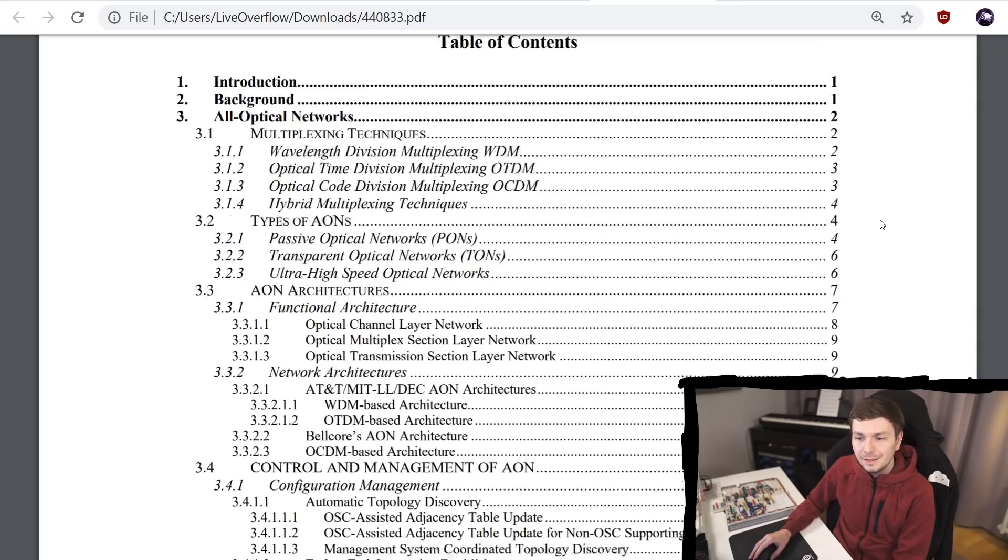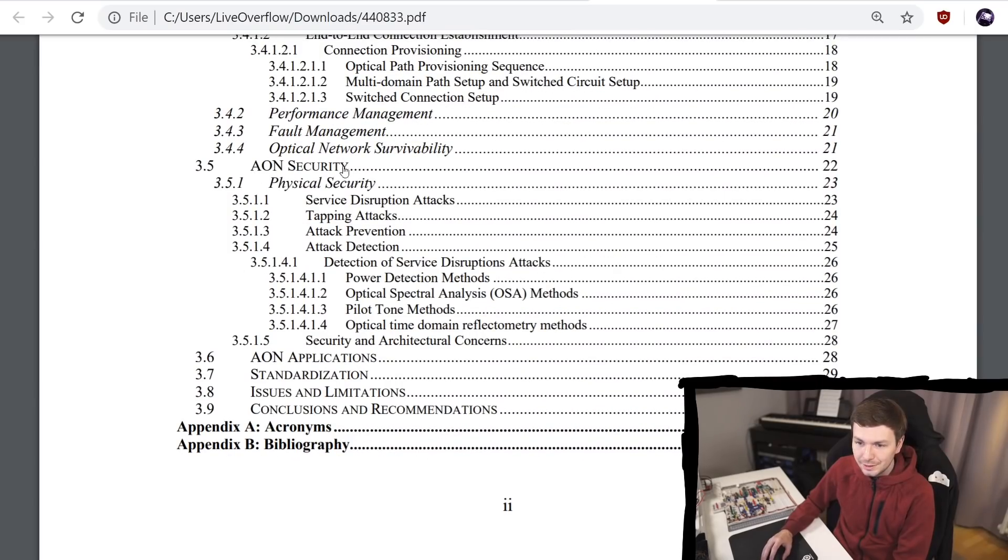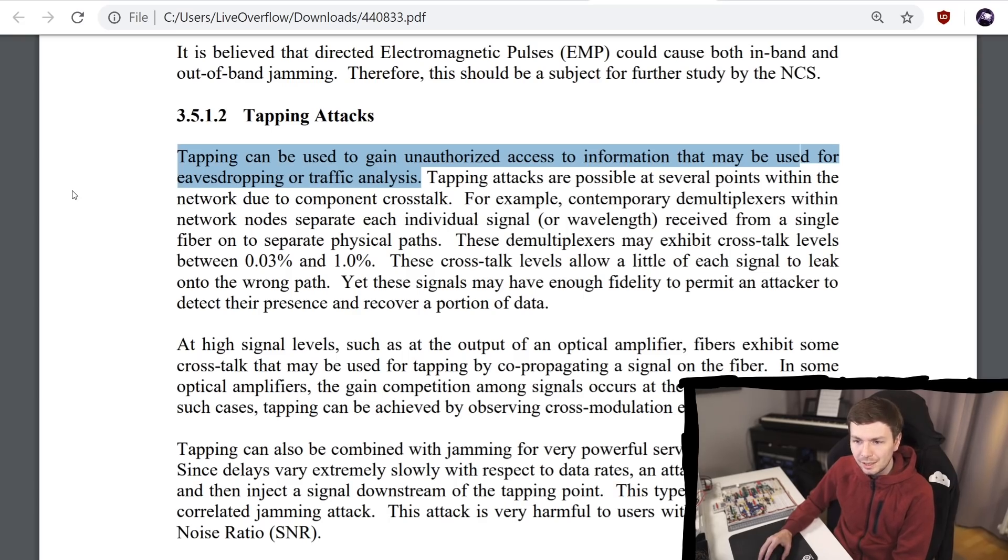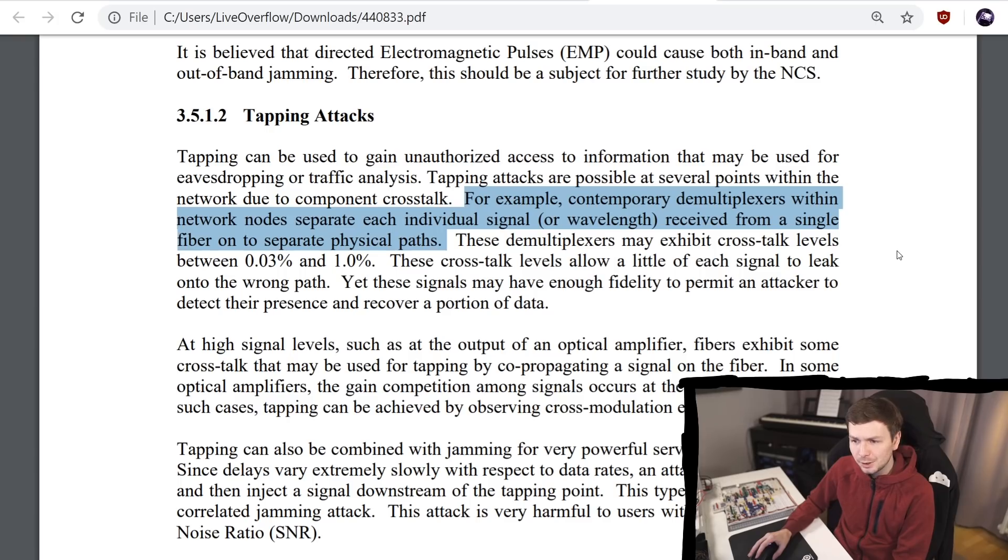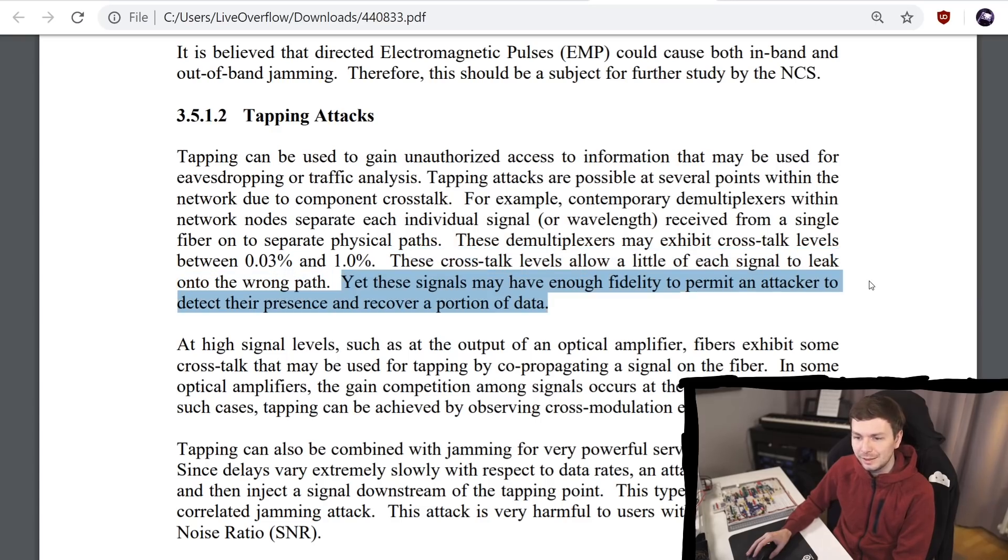In this document there's something very interesting - a security chapter specifically about tapping attacks. Tapping can be used to gain unauthorized access to information for eavesdropping or traffic analysis. Tapping attacks are possible at several points within the network due to component crosstalk. Contemporary demultiplexers may exhibit crosstalk levels between 0.03% and 1%, allowing a little of each signal to leak onto the wrong path, yet these signals may have enough fidelity to permit an attacker to detect their presence and recover a portion of data.